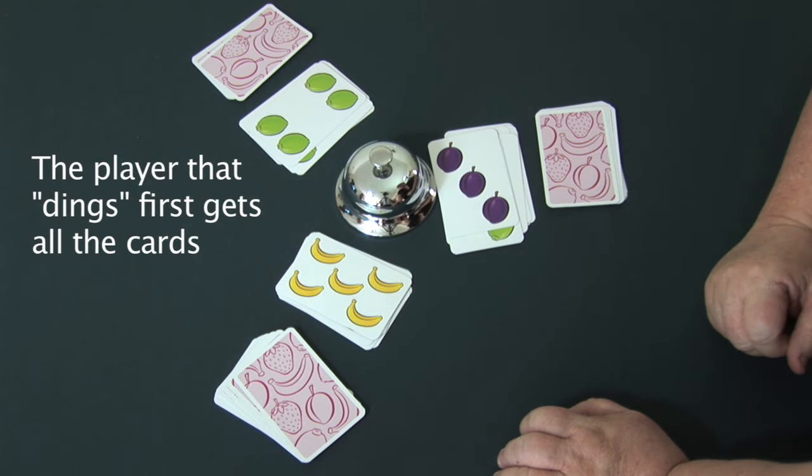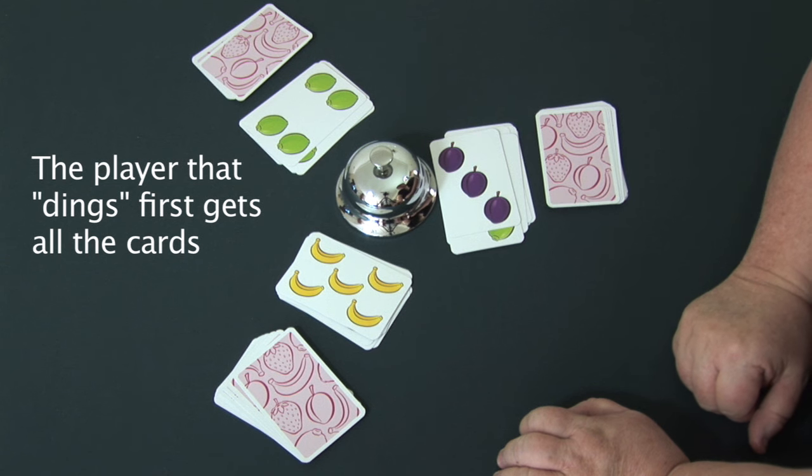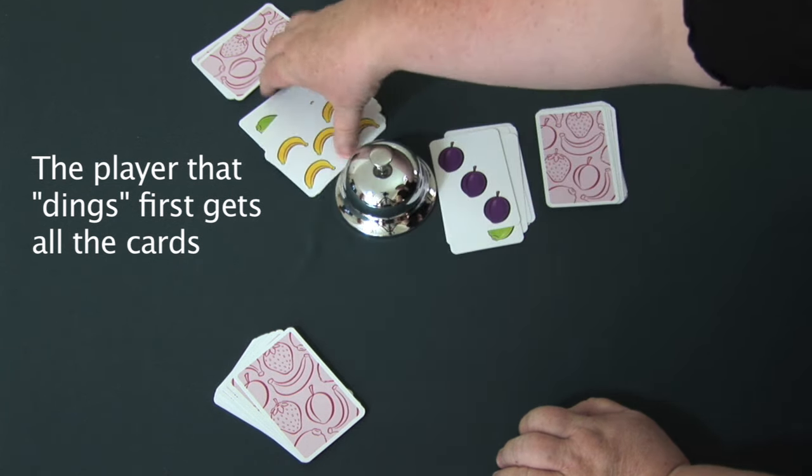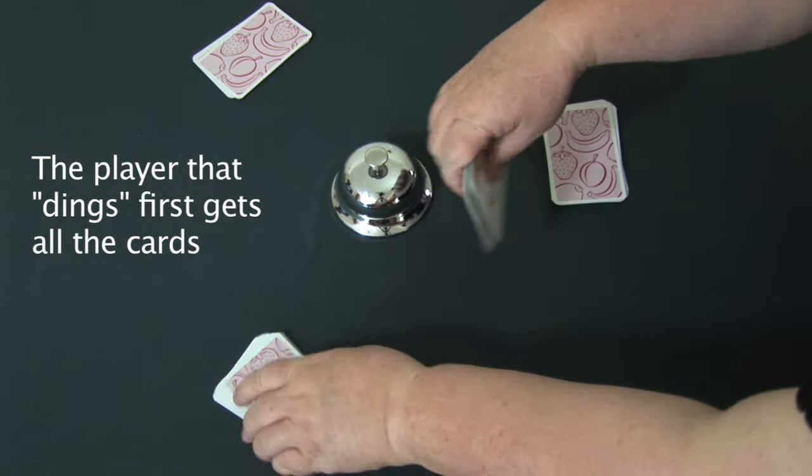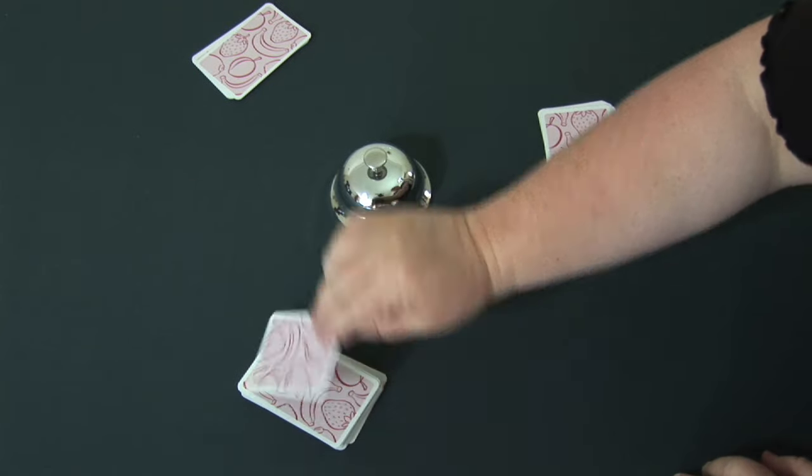Five bananas. The first person to see it hits the bell. The person who got there first takes all the cards and puts them under their pile, and they start again.